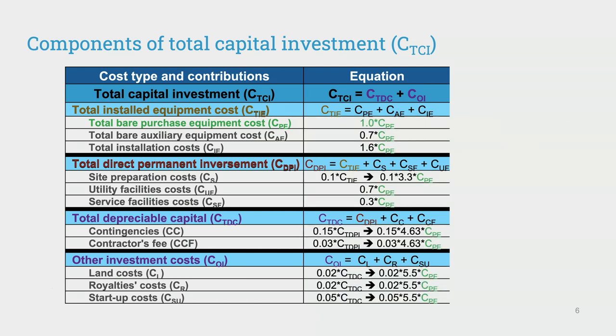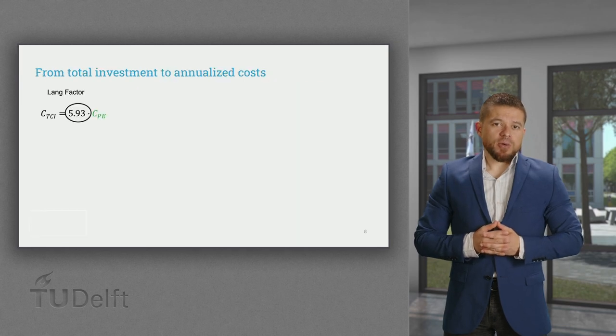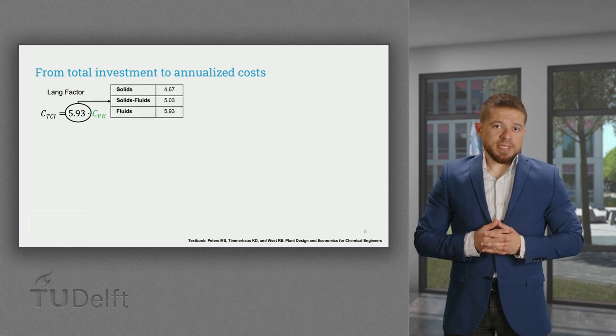These different contributions can be calculated as factors of the total bare purchase equipment cost. We can finally aggregate all of these factors to calculate the total capital investment as the function of the total bare purchase equipment cost. This aggregated value is known as the Lang factor, and it depends on the type of materials handled in the process, either solids, fluids, or both.